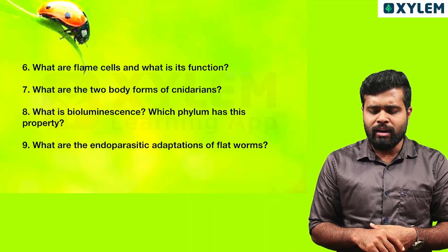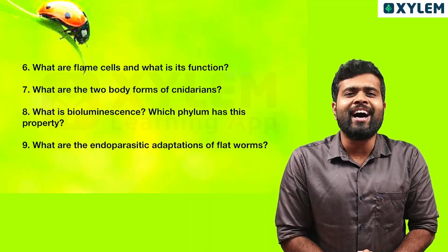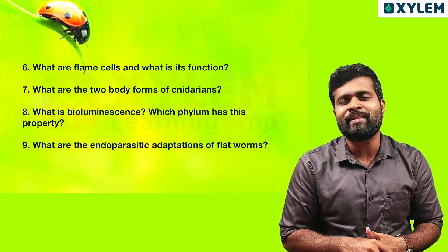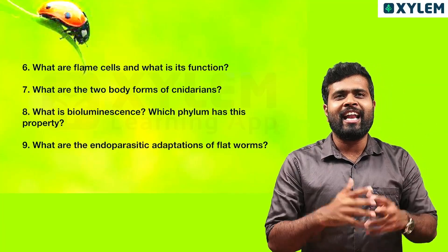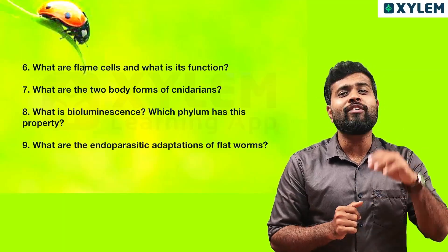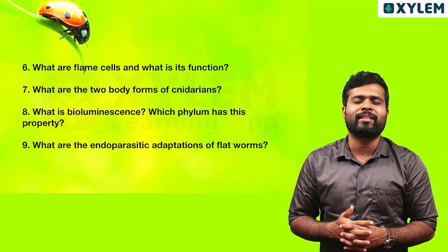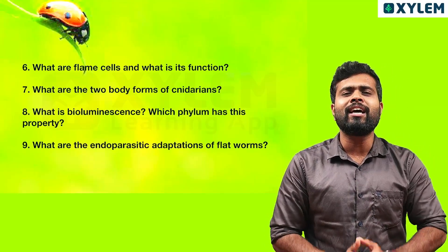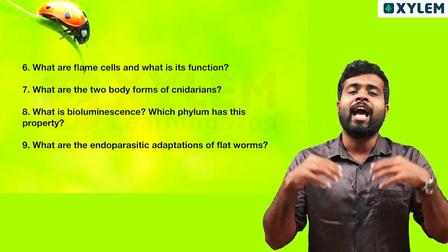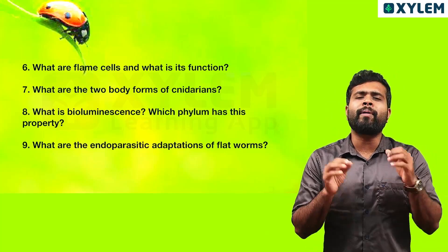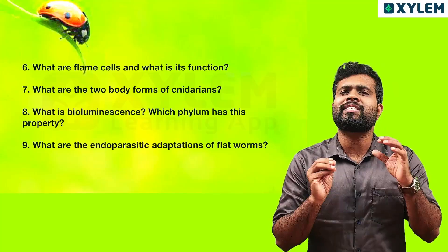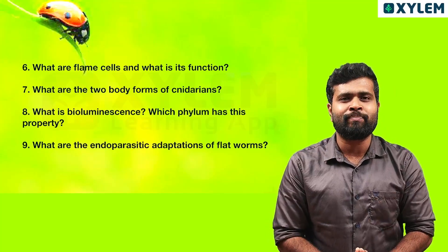Next question: what are flame cells and what is their function? Flame cells are found in Platyhelminthes. Flame cells are the same as osmoregulation. This flame cells function is osmoregulation. So in Platyhelminthes, flame cells act as the excretory organ.